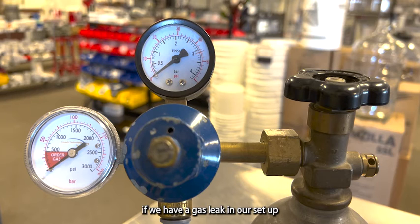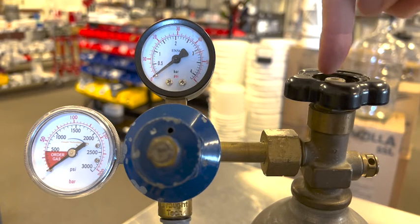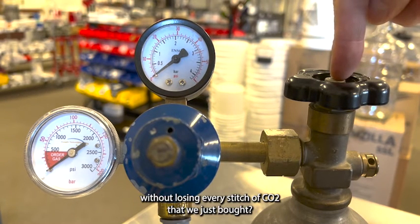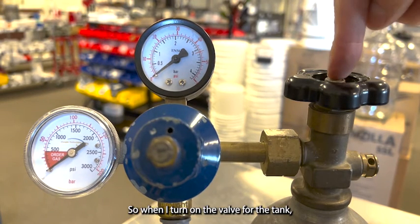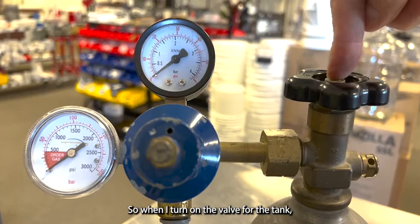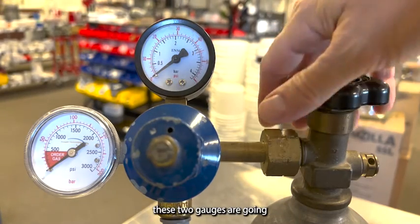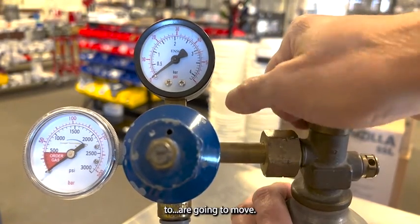So how can we tell if we have a gas leak in our setup without losing every stitch of CO2 that we just bought? When I turn on the valve for the tank, these two gauges are going to move.